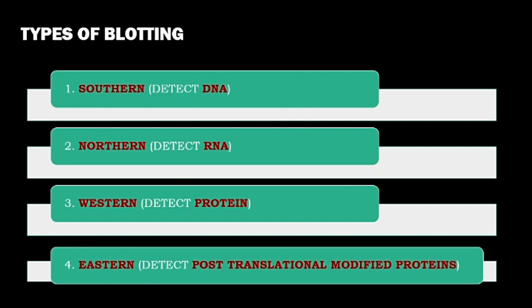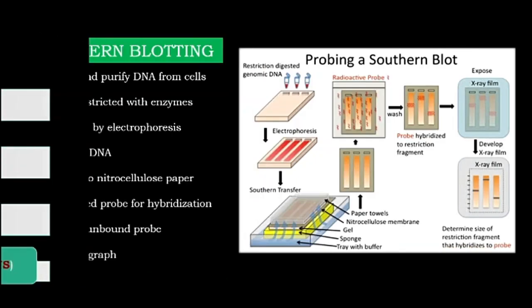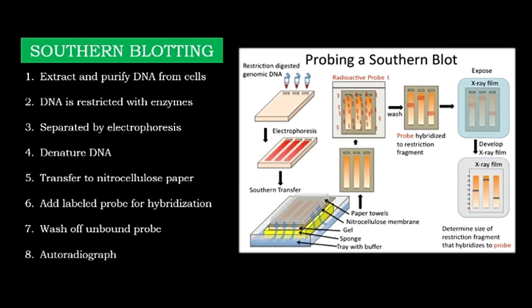Now let's look at the types of blotting. The first is Southern blotting, which helps to identify and detect DNA. The second is Northern blotting, used to detect RNA. The third is Western blotting, which helps detect proteins. And the fourth is Eastern blotting, which helps detect post-translationally modified proteins.